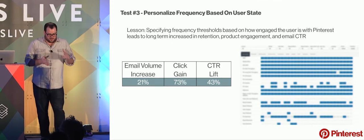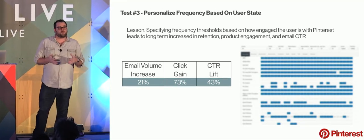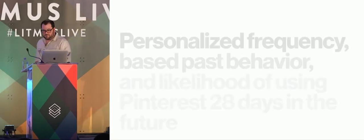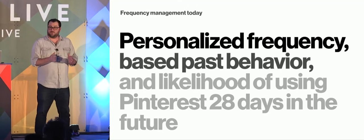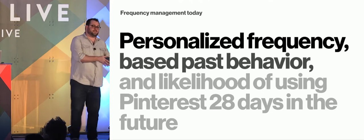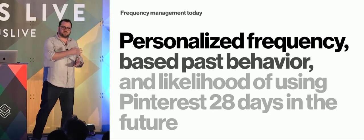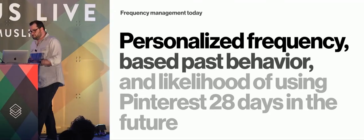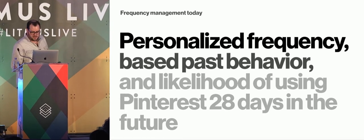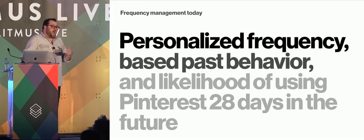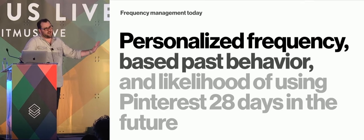That said: if we can get a little more personal with email frequency we get better results — what if we fully personalize it? Today we have a fully machine-learning-backed personalized frequency tool which decides how many emails to send you this week so that you use Pinterest 28 days in the future. That's the goal of the machine learning model. As a marketer it was very scary at first, but you learn the lingo and you work with the professionals.